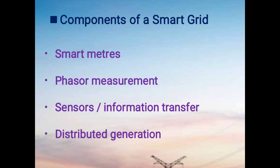Distributed generation allows small-scale renewable generation using solar, wind, fuel cells, biogas, and micro turbines. Generation is placed close to the load. This increases reliability and provides better efficiency for distributed generation.